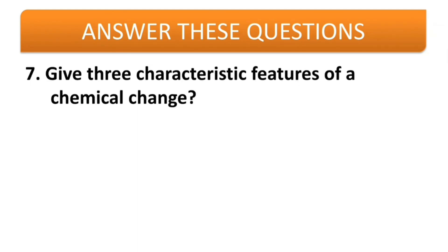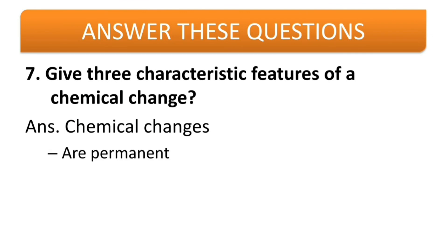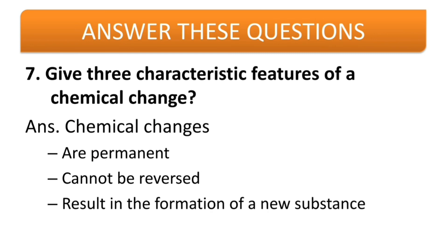Seventh question: give three characteristic features of chemical change. Chemical changes are permanent, cannot be reversed, and result in the formation of a new substance. These are the three main characteristics of chemical change — they are permanent, cannot be reversed, and result in the formation of a new substance because there is a change in the internal structure of the substance.